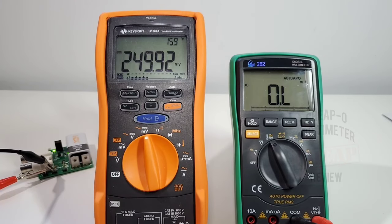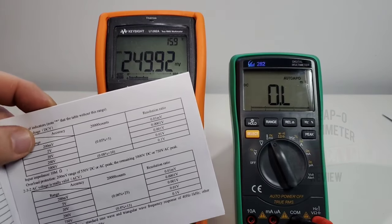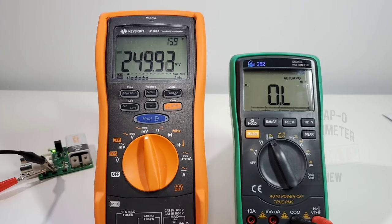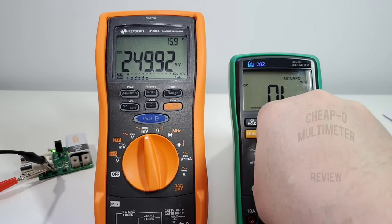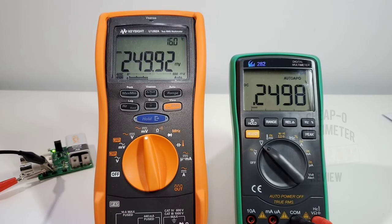We're going to start things off with a voltage test, DC accuracy. Let's see how good it is. The Keysight is showing 249.92 millivolts, while our Z282 is sitting there over limit. We are in millivolt range. According to the manual it should be able to pick this up—it's supposed to start at 200 millivolts, but for whatever reason it is showing us over limit. So I'm going to take it out of millivolts and put it into standard volts.